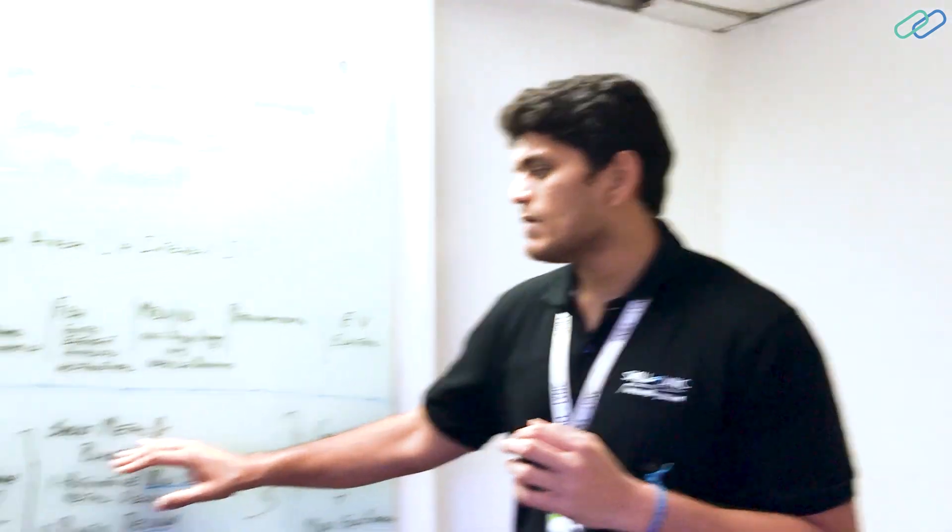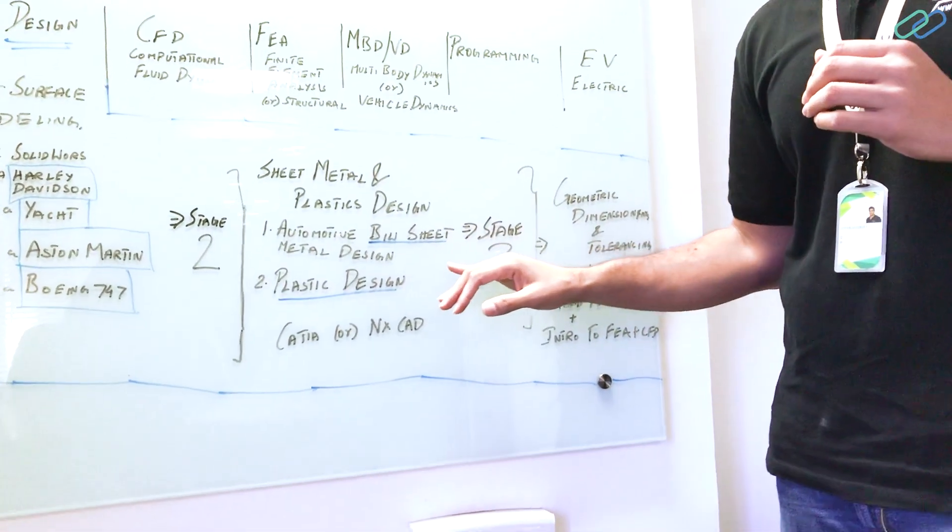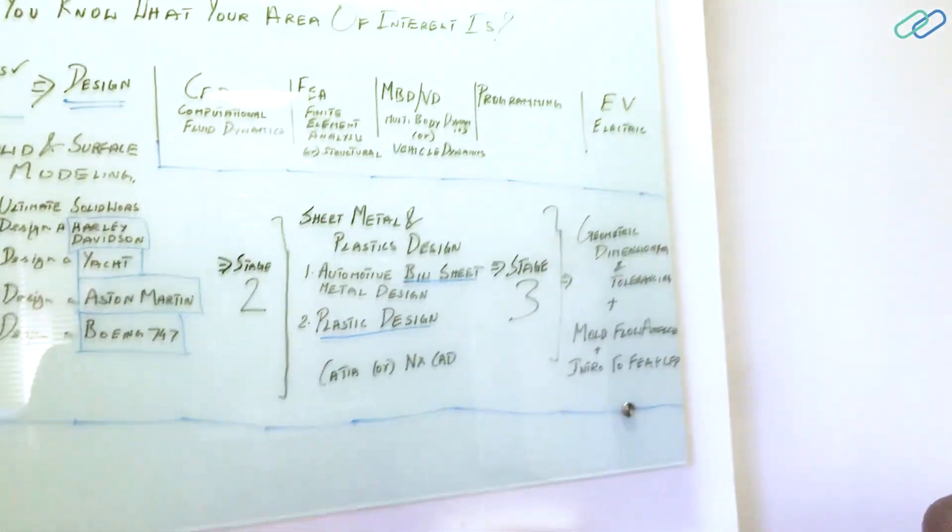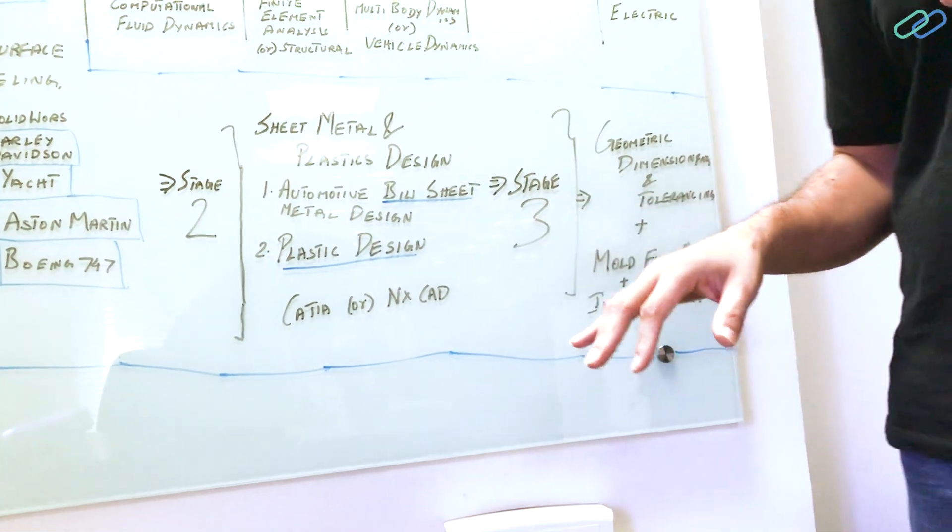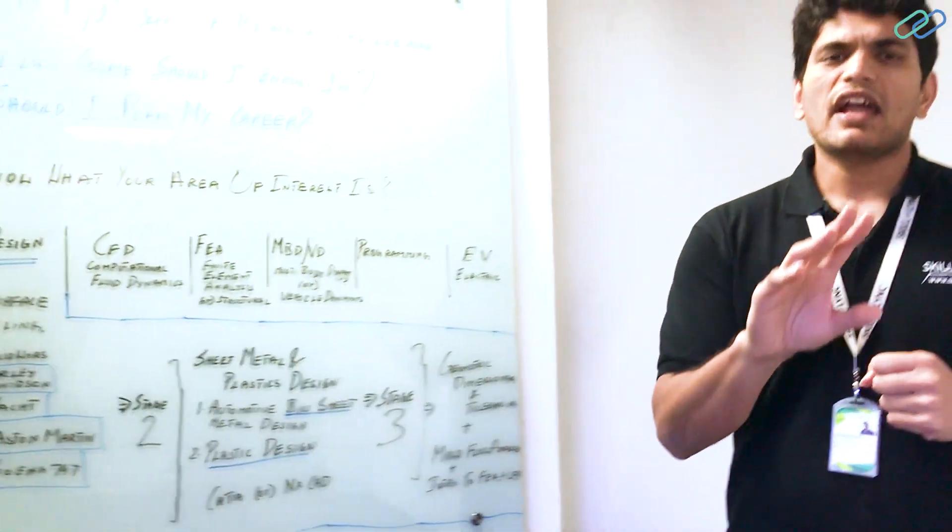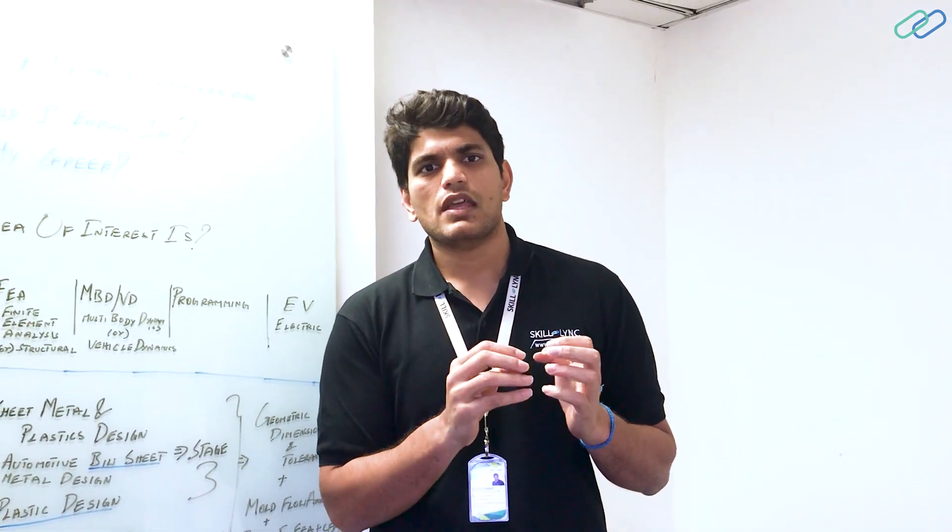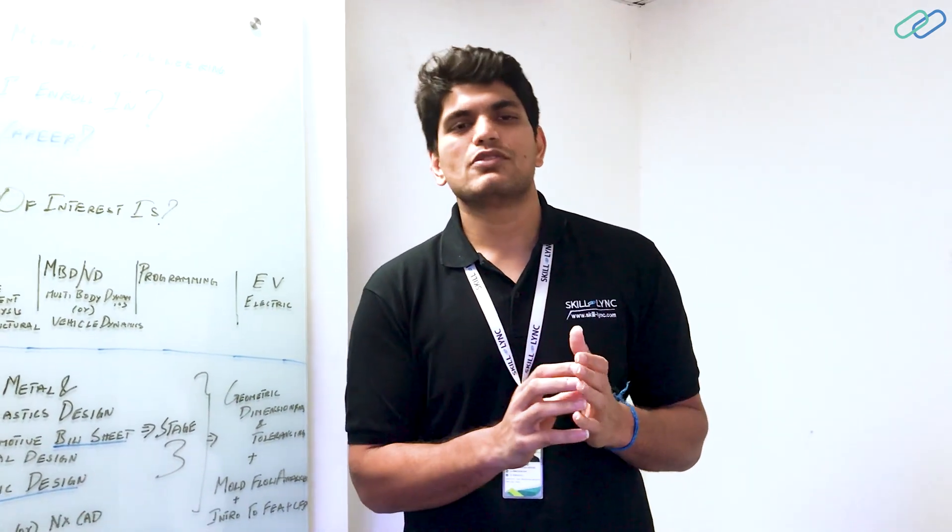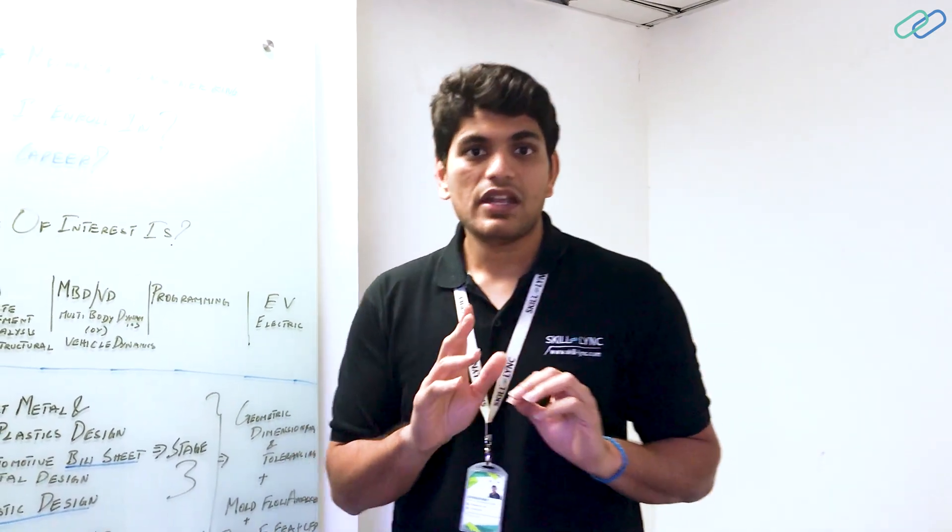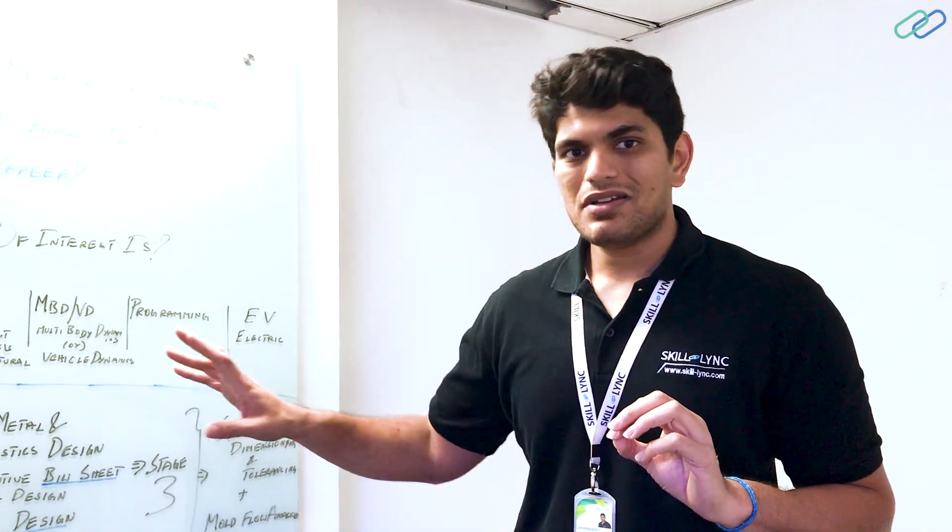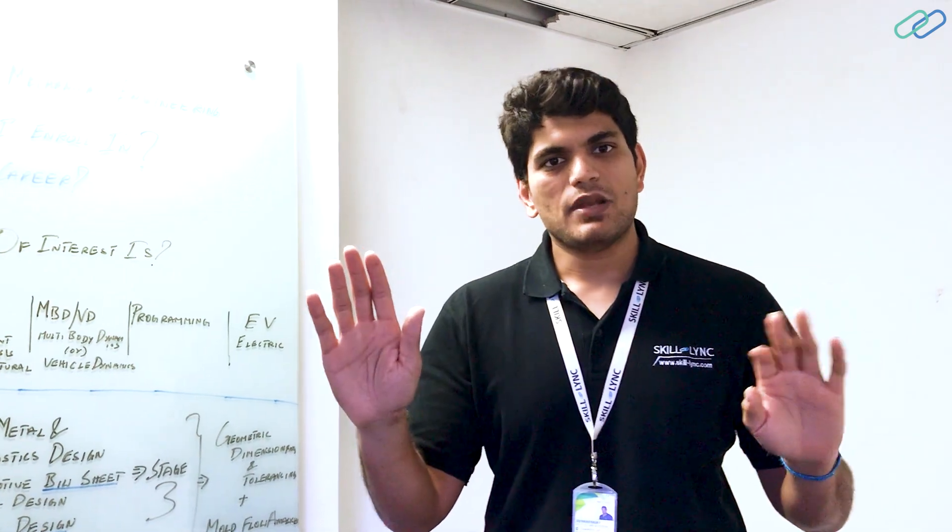So understanding sheet metal and plastics should be your stage two. Here, some of the courses that you can take a look into is automotive BIW sheet metal design using Katya or NXCAD or plastic design using Katya or NXCAD. Learning these two skills in Katya or NXCAD is important because industries pretty much use these two softwares to work on plastics or sheet metal. Now you have learned solid modeling, surface modeling, sheet metal, plastics.